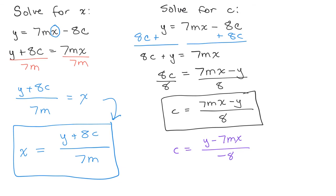You'll have y minus 7mx divided by negative 8. That's probably what it would look like at the end. These are actually equivalent to each other because if you multiply the numerator by negative 1 and the denominator by negative 1, then it looks like the other one.